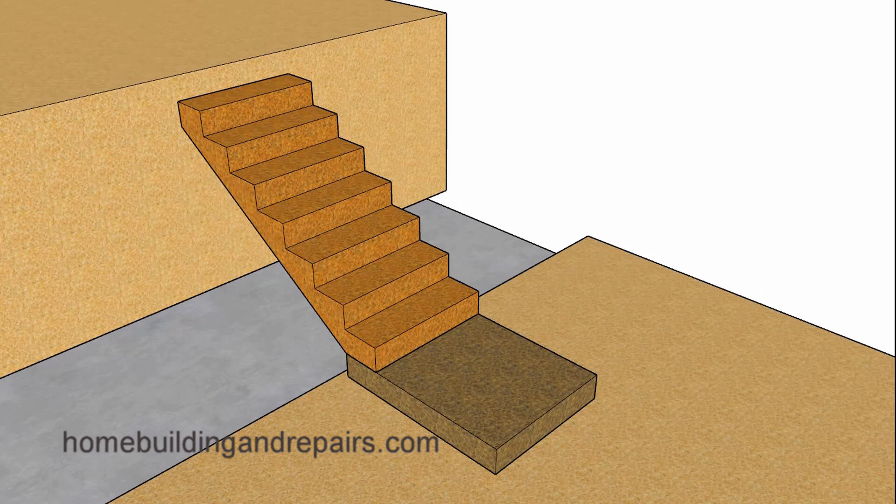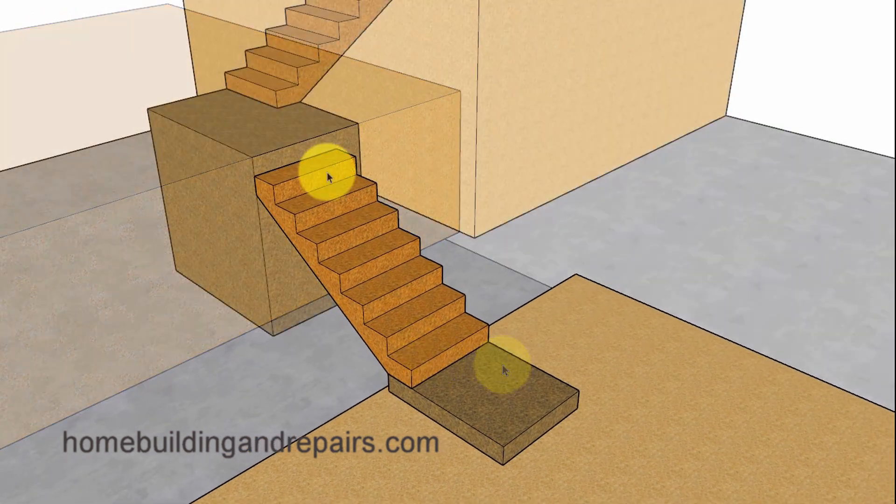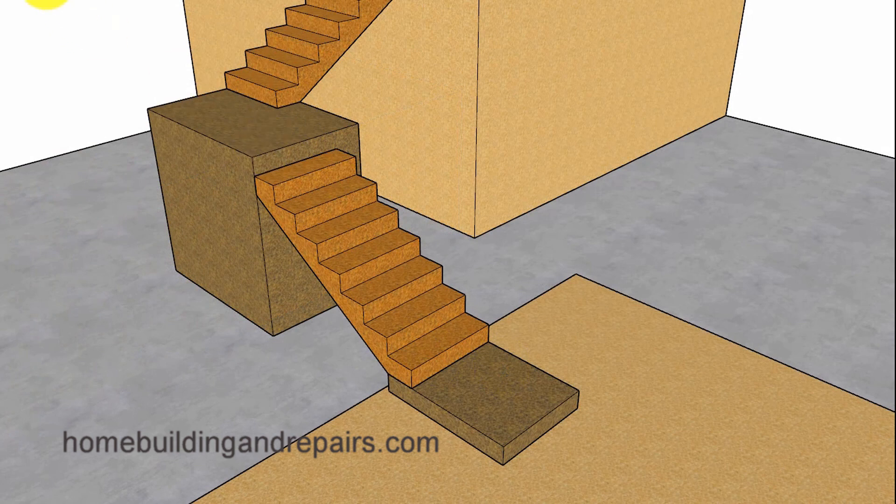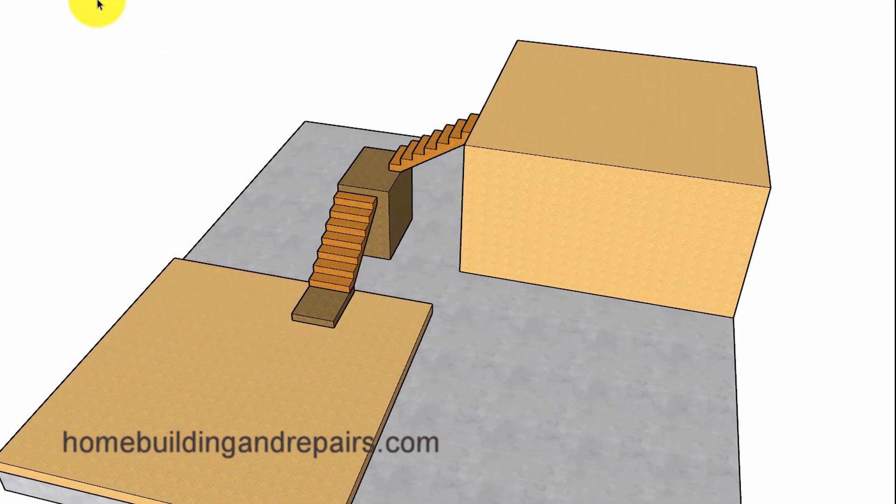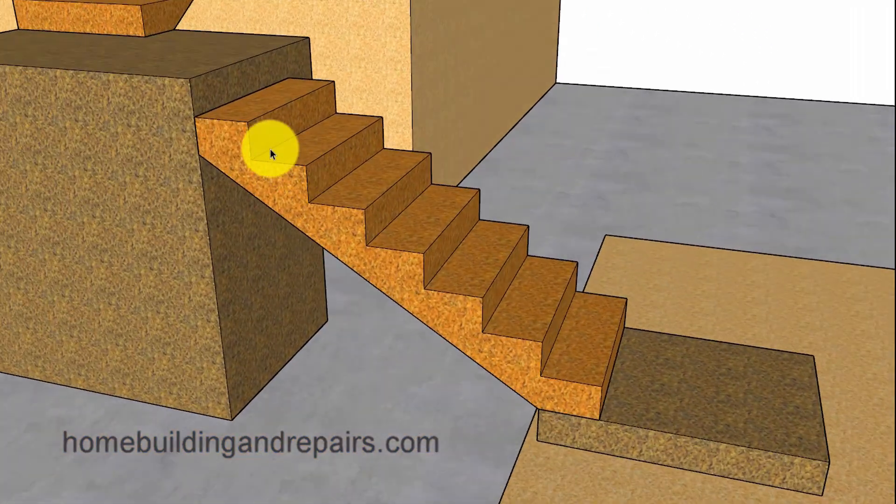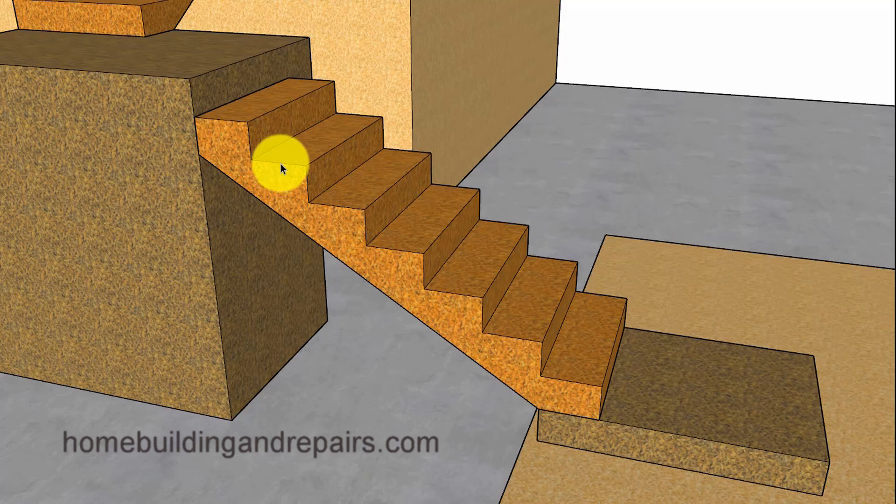Or you could run into another situation where you have a landing in the middle that would provide you with the ability to build two different flights of stairs with different riser heights. For example, the upper stairway could have a riser height of seven and a quarter inches, and the lower section could have a riser height of seven inches or even seven and a half inches. And something like this could be useful in split level homes or in homes with multiple levels and landings.